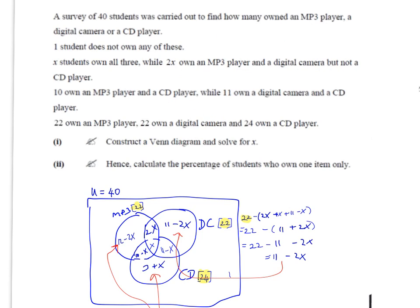This is the details of a three-set problem, and as usual it says construct a Venn diagram and solve for x. Because we're talking about three different collections of data, we need to make circles for each one: a circle for MP3, a circle for digital camera, and a circle for CD players.